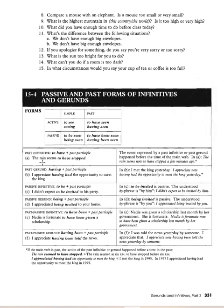Past infinitive example: 'The rain seems to have stopped.' Past gerund example: 'I appreciate having had the opportunity to meet the king.' Both are in active voice. In passive voice — the subject receives the action: 'I didn't expect to be invited to his party' — passive infinitive. 'I appreciate being invited to your home' — passive gerund. Past passive infinitive: 'Nadia is fortunate to have been given a scholarship.' Past passive gerund: 'I appreciate having been told the news.'